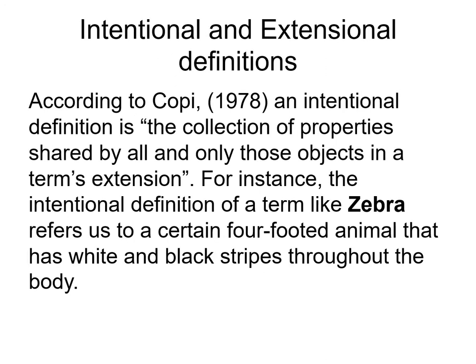Intentional and extensional definitions. An intentional definition is a collection of properties, according to Copi (1978). It is a collection of properties shared by all and only those objects in a term's extension. For instance, the intentional definition of a term like 'zebra' refers us to a certain four-footed animal that has white and black stripes throughout the body.